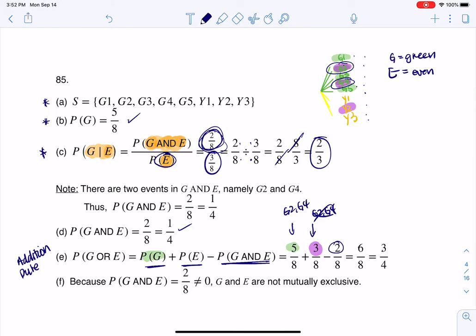And last but not least, are green and even mutually exclusive, meaning is it possible to get a green card that is also even? And you can see it is possible. We've been talking about it, G2 and G4. Since that can happen at the same time, just thinking about it, I know they're not mutually exclusive. But if I calculate this probability, there were 2 out of those 8, and that is not equal to 0. So they are not mutually exclusive.